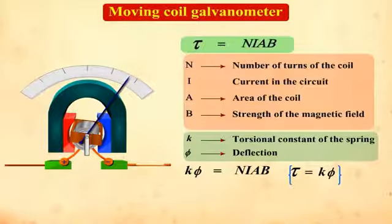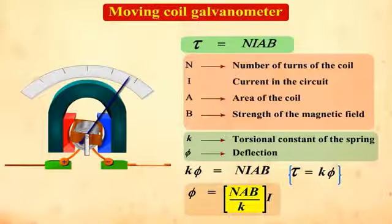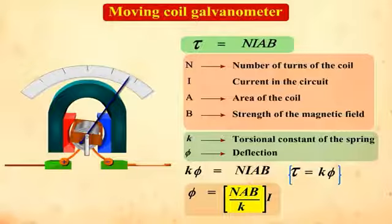The deflection and the current are thus related by the expression phi = (NIAB/k)·I. This quantity in the bracket is constant for a galvanometer. Thus, using the deflection, we can obtain the current in the circuit.